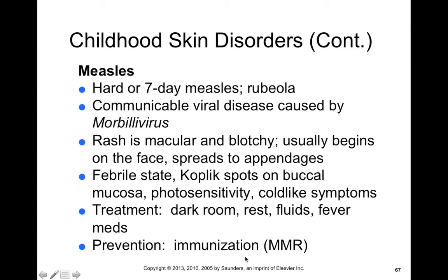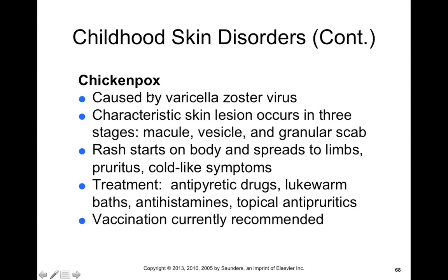Chickenpox is also one of those childhood skin disorders, caused by varicella-zoster — human herpes type 3. The characteristic skin lesion occurs in three stages: a macule that turns into a vesicle, which turns into a scab. The rash starts on the body and spreads to the limbs, and you get pruritus and cold-like symptoms. It's treated with antipyretic drugs, lukewarm baths, and antihistamines. Vaccination is currently recommended for people of more recent births. However, if you've already had chickenpox, it's dormant within your cranial or spinal ganglia and you can't eliminate it — but it can reactivate as shingles.